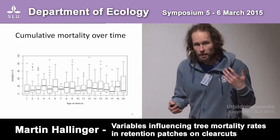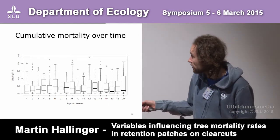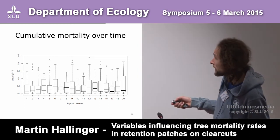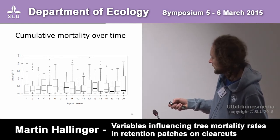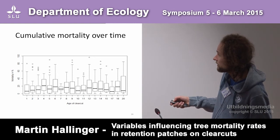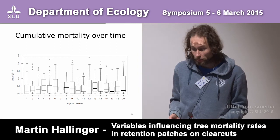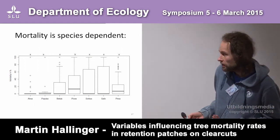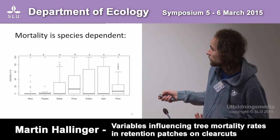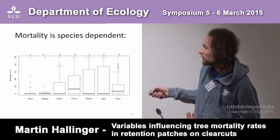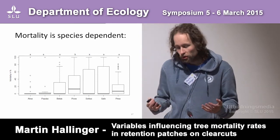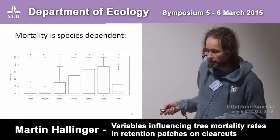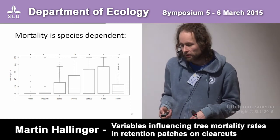Looking at cumulative mortality over time across different ages of clear cuts, you might expect that the older the clear cut, the more trees die. But we found a significant increase only in the first four years, after which it leveled off — which was also unexpected. Mortality was species-dependent: highest in spruce, quite high in willow and mountain ash, while pine and birch had about the same average mortality, though many birch had zero mortality in their retention tree groups.